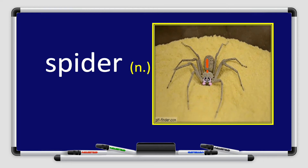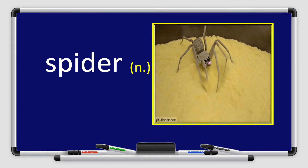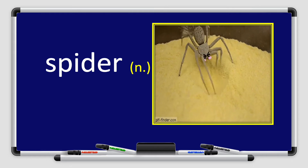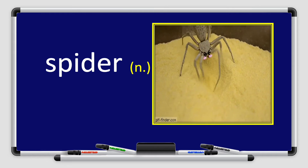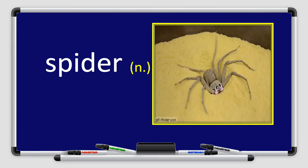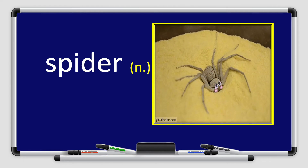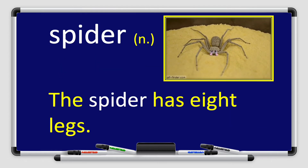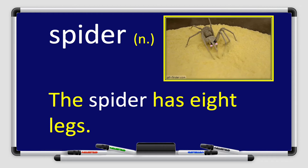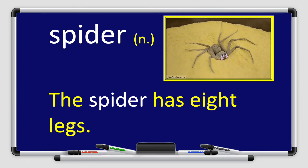Our next word for today is spider. Spider. Repeat after me please: spider. Spider is a noun. Look at the picture — I can see a spider. Let's use spider in a sentence: The spider has eight legs. Can you use the word spider in a sentence?